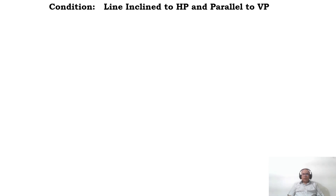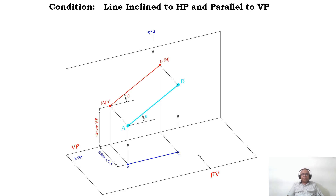In this video we will take up one more concept on projections of lines — the introduction part where the line is inclined to HP and parallel to VP. Looking at the three-dimensional sketch, you can see the line AB is inclined to HP in space. The inclination made by that line with respect to HP is theta.